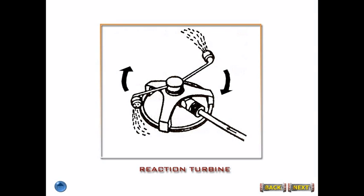Reaction turbine. In a reaction turbine, the rotor turns primarily as a result of the pressure of a fluid — that is, steam — expanding through the nozzles which are moving. A reaction turbine is also called a pressure turbine. A garden sprinkler is a simple reaction turbine, where water coming out of the sprinkler nozzle under high pressure causes the wheel to rotate.